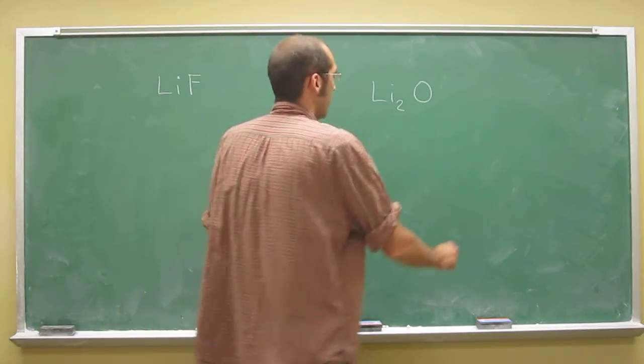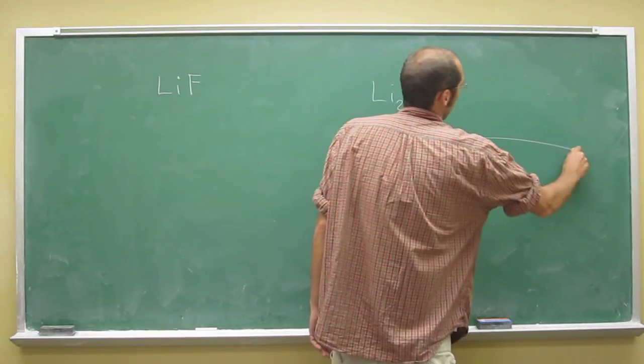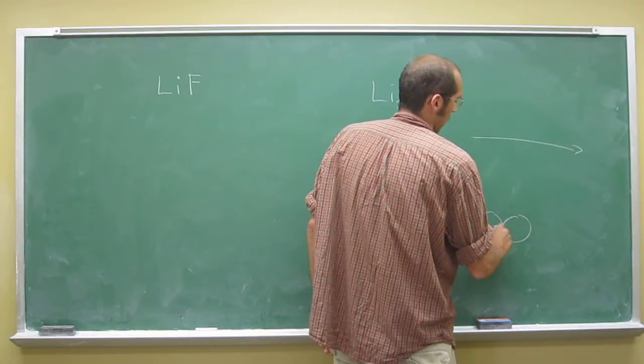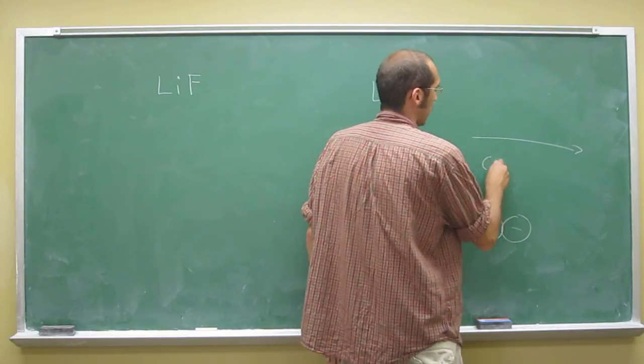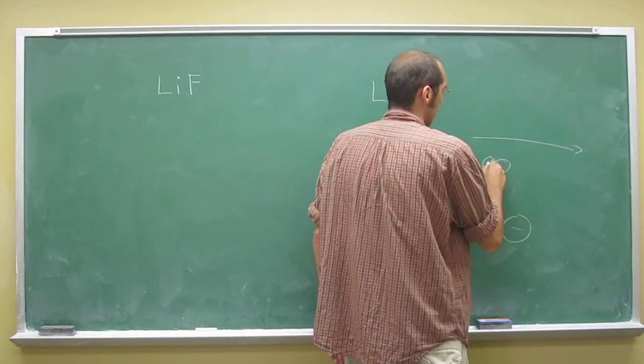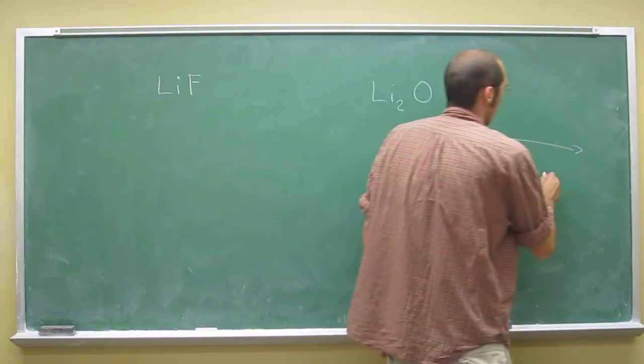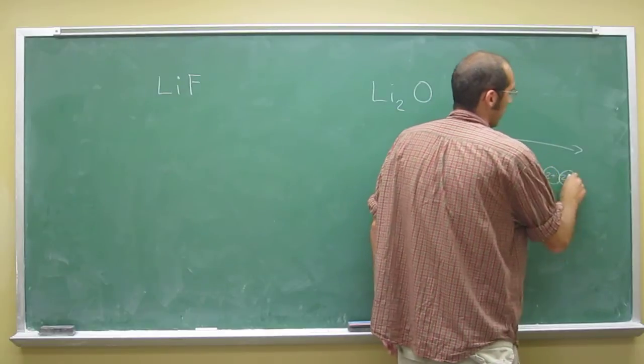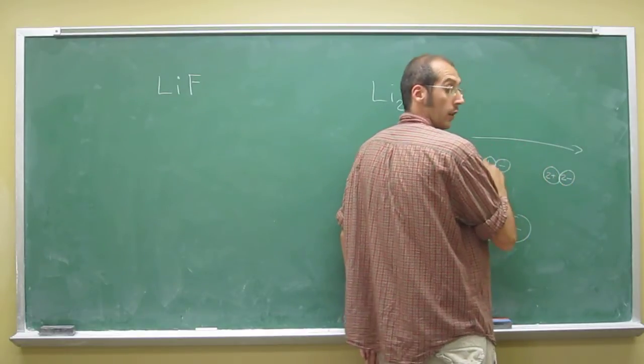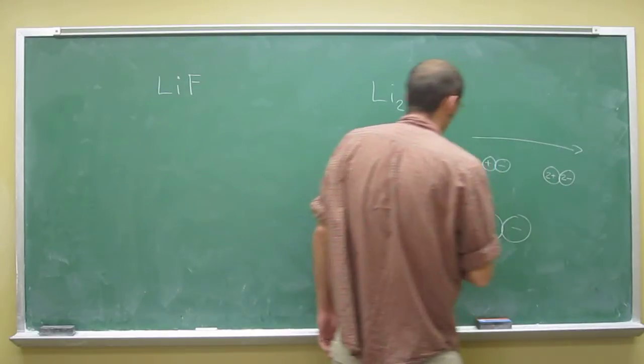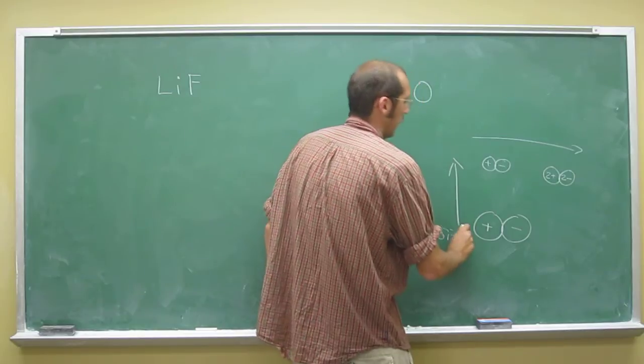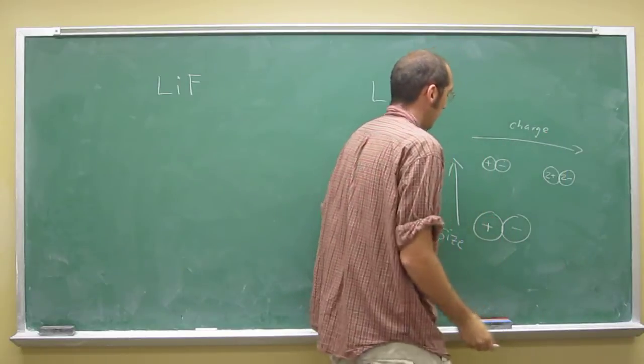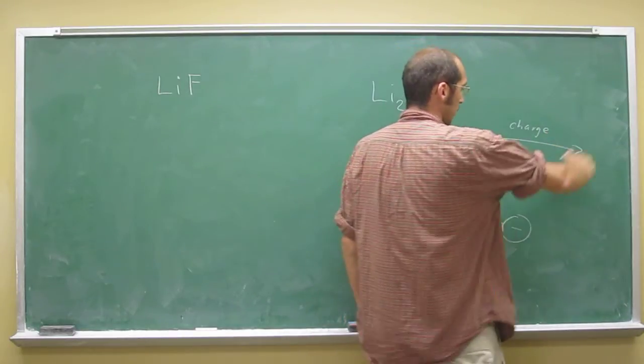Remember we said that attraction increases in such a way - a big plus and minus aren't as attracted to each other as a small plus and minus, but two plus and two minus are more attracted than one plus and one minus. So this is size here, and this is charge. This is attraction, it increases in this way.